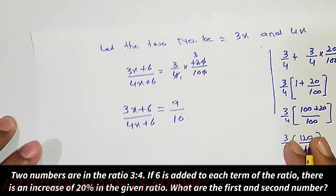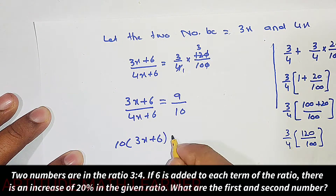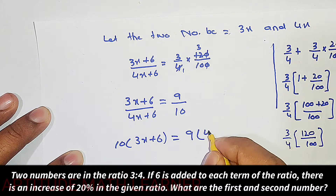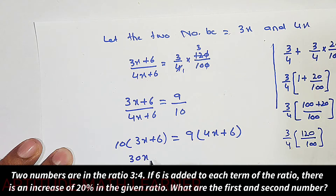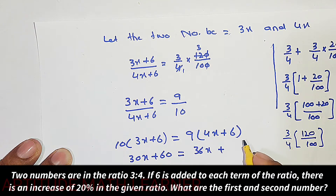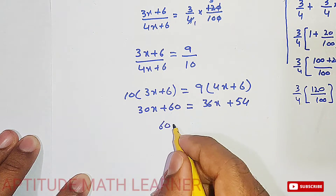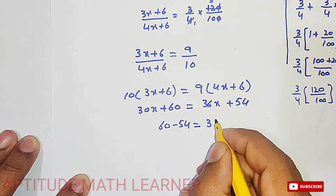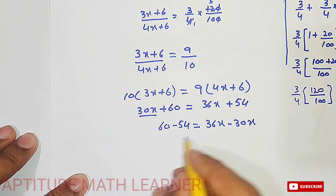Now cross-multiplying: 10 times (3x plus 6) is equal to 9 times (4x plus 6). Further solving, we get 30x plus 60 equals 36x plus 54. Rearranging, 60 minus 54 equals 36x minus 30x.